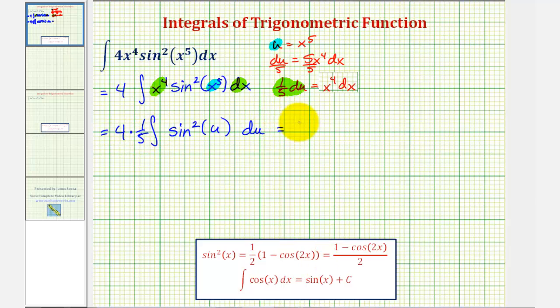So here we have four-fifths times the integral of, performing this substitution, another factor of one-half. We'll have the integral of the quantity one minus cosine two u, and now we'll find the antiderivative with respect to u.